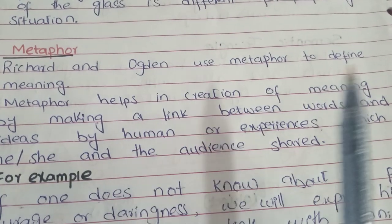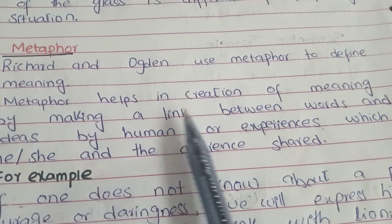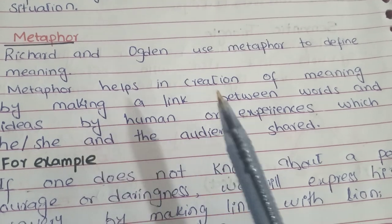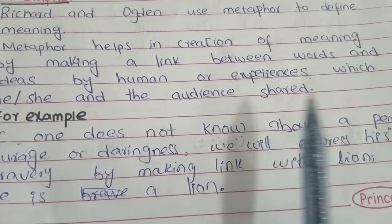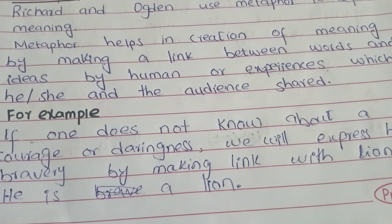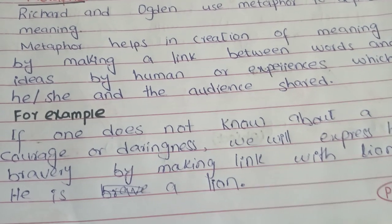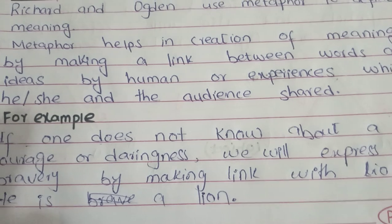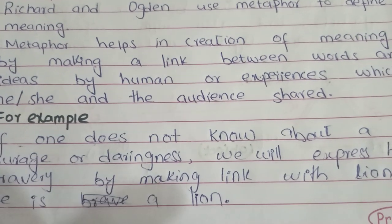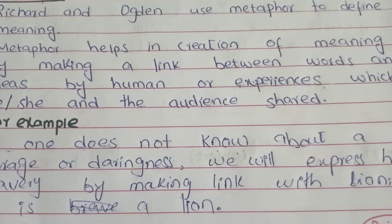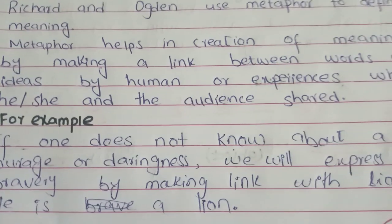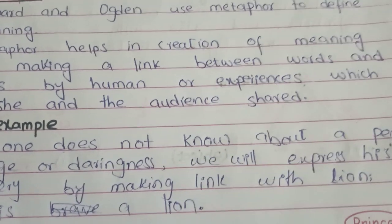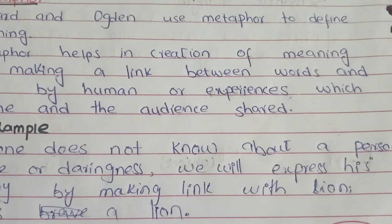Ogden and Richards also used metaphor to define meaning. Metaphor helps in the creation of meaning by making a link between words and ideas through experiences that the speaker and the audience share. For example, if one does not know about a person's courage or daring, we can express their bravery by making a link with a brave creature like a lion, and say 'he is a lion.' Ogden and Richards also gave the Definition Theory and the Sample Theory, which we will continue in the next video.